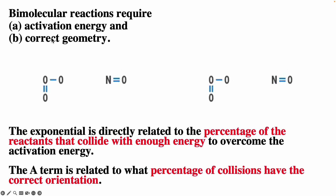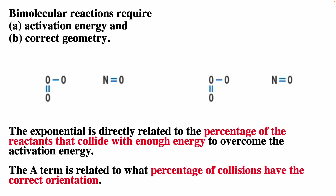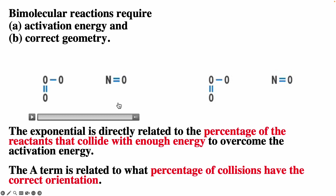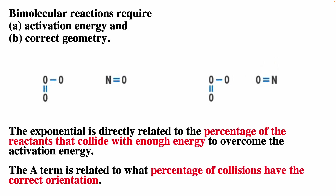For bimolecular reactions, you have to have enough energy to overcome the activation energy, and you also have to have the correct geometry. For two molecules to react, they must collide. If an ozone molecule and a nitrogen monoxide molecule meet without enough energy to overcome their bond energies, a reaction does not occur and the molecules separate without reacting. The exponent in the Arrhenius equation is directly related to the percent of reactants that have enough energy to overcome the activation energy. They also need to have the correct orientation — if two molecules collide with sufficient energy but with an orientation that does not allow new bonds to form, no reaction takes place. The molecules will separate as reactants. In terms of the A term for the Arrhenius equation, you can think about it as being related to the percent of collisions that have the correct orientation.